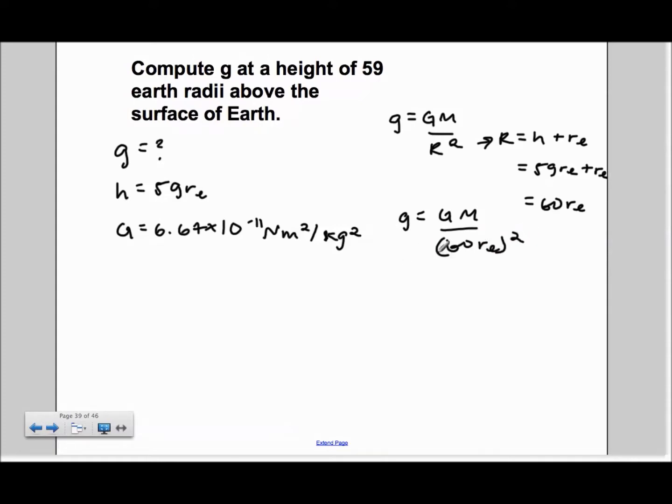We distribute the squared, and we get an answer of g is equal to GM over 3600RE squared.